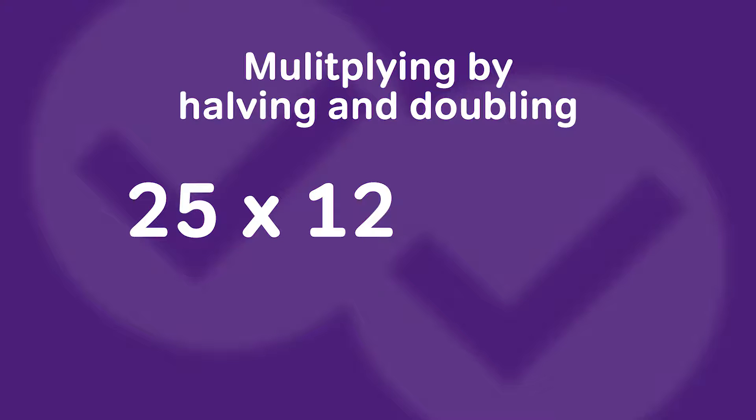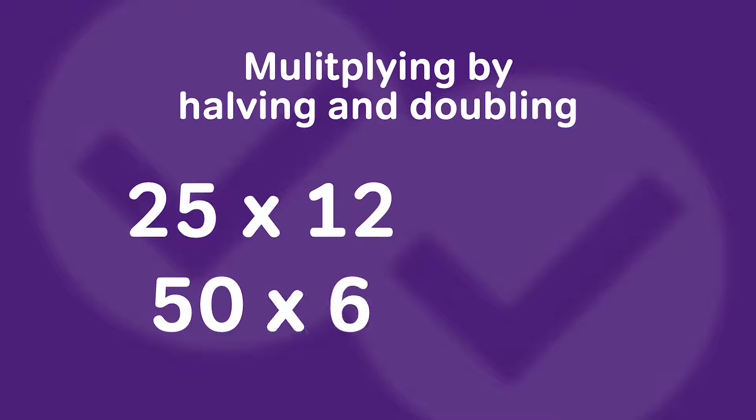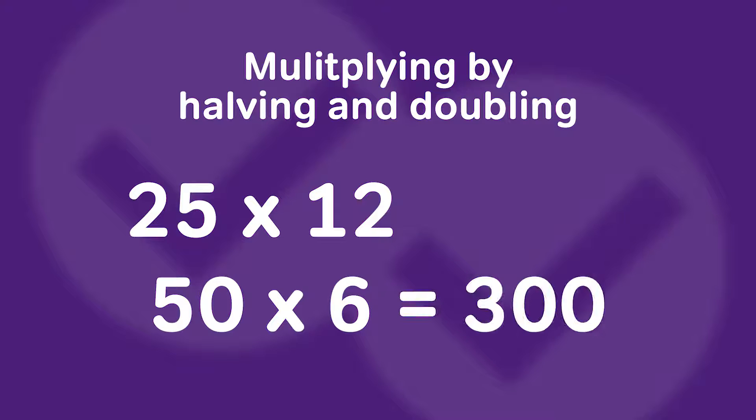How about 50 times 6? Do you know 50 times 6? And boom — by now you probably should have said 300. 5 times 6 is 30, add the zero. That wasn't hard.